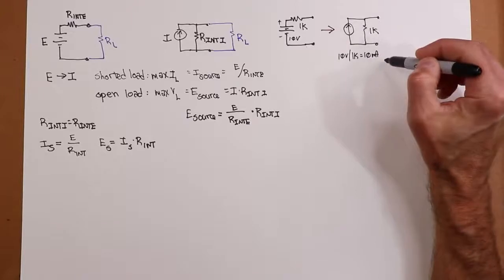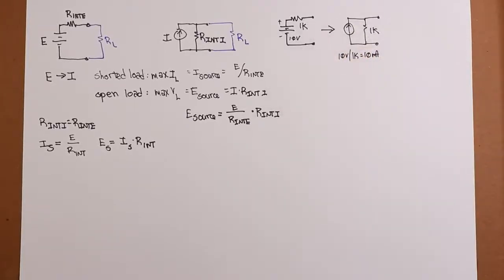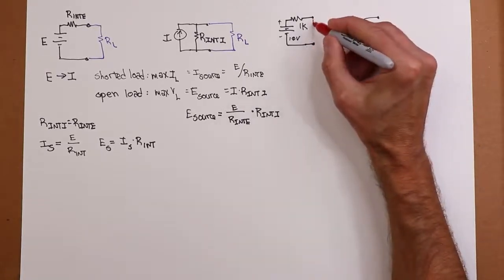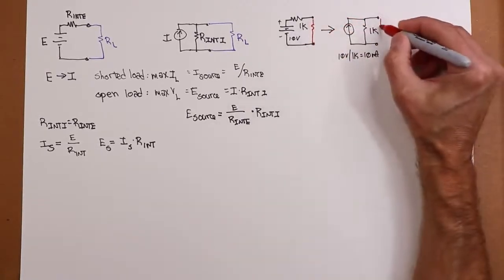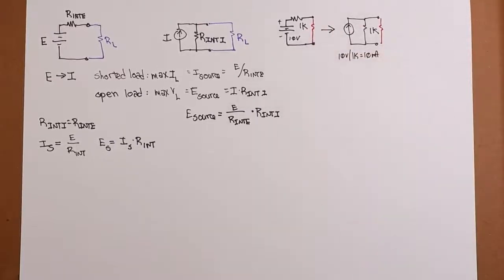So my claim is that a 10 volt source in series with 1K is functionally identical to a current source of 10 milliamps in parallel with 1K. I can stick anything out here, I put the same thing out here. That red resistor is going to see the same current voltage in both circuits. That's the basic idea.